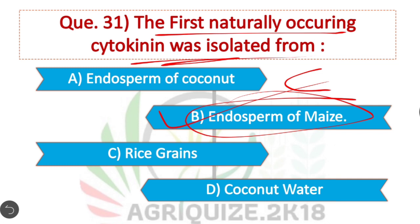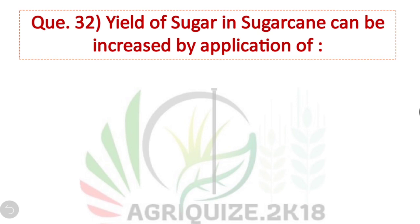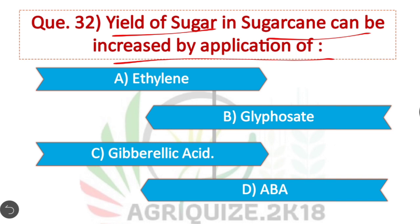Question 32: Yield of sugar in sugarcane can be increased by the application of — Option C is correct: Gibberellic acid. By the application of gibberellic acid, the yield of sugar in sugarcane can be increased.